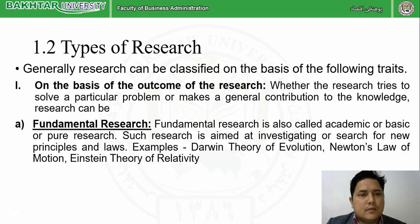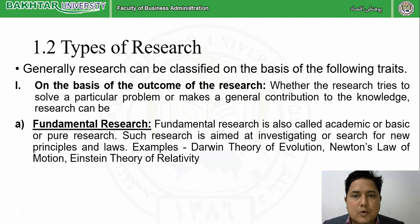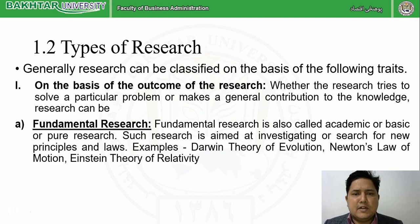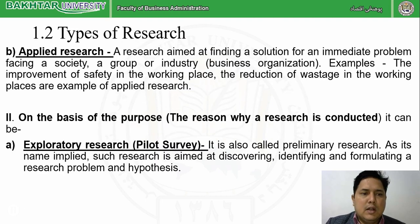Let us move to the types of research. If I say there are 13 types of research, you may be confused. If I say there are two main types, you are again confused, because in different chapters you will see research classified as 2, 4, or other numbers of types. To reduce this confusion, generally research can be classified on the basis of following traits — the first being the outcome of research, giving us fundamental research and applied research.